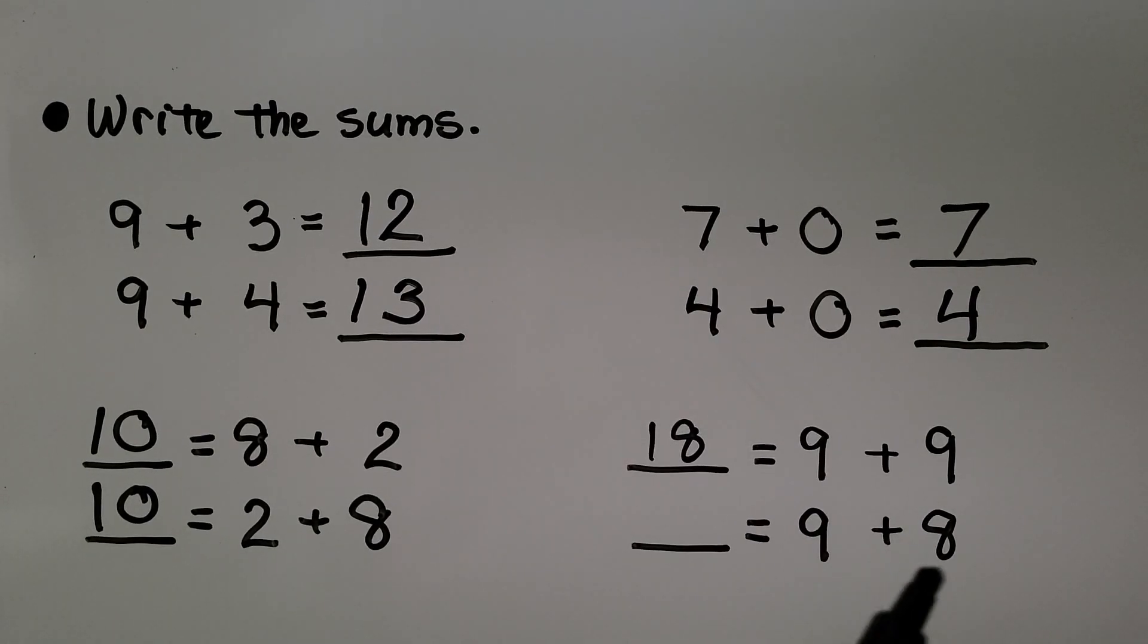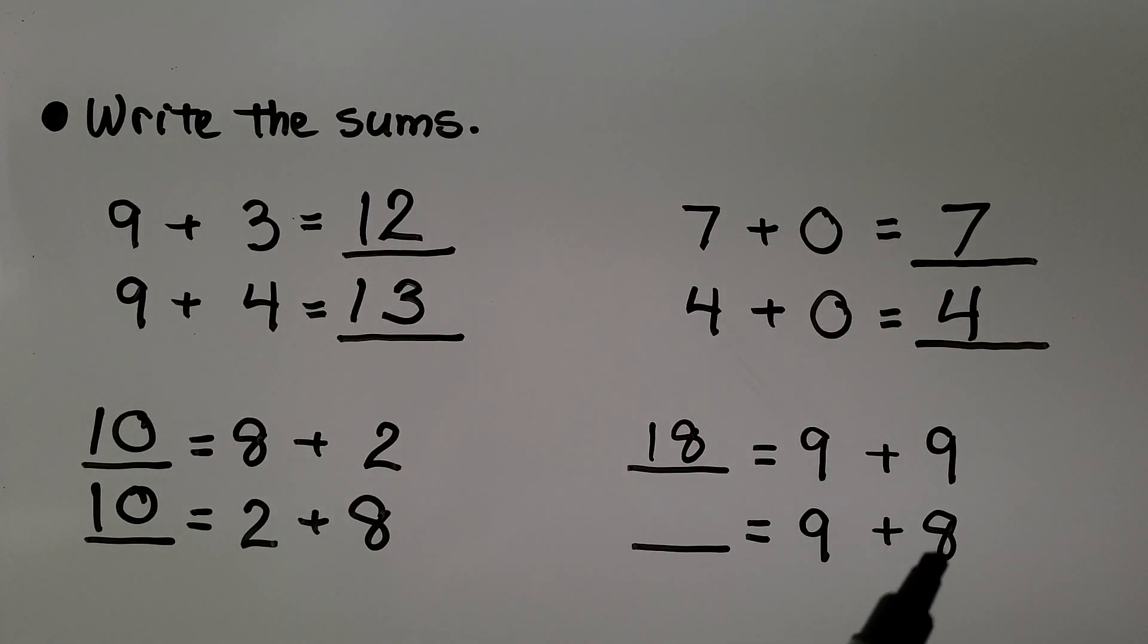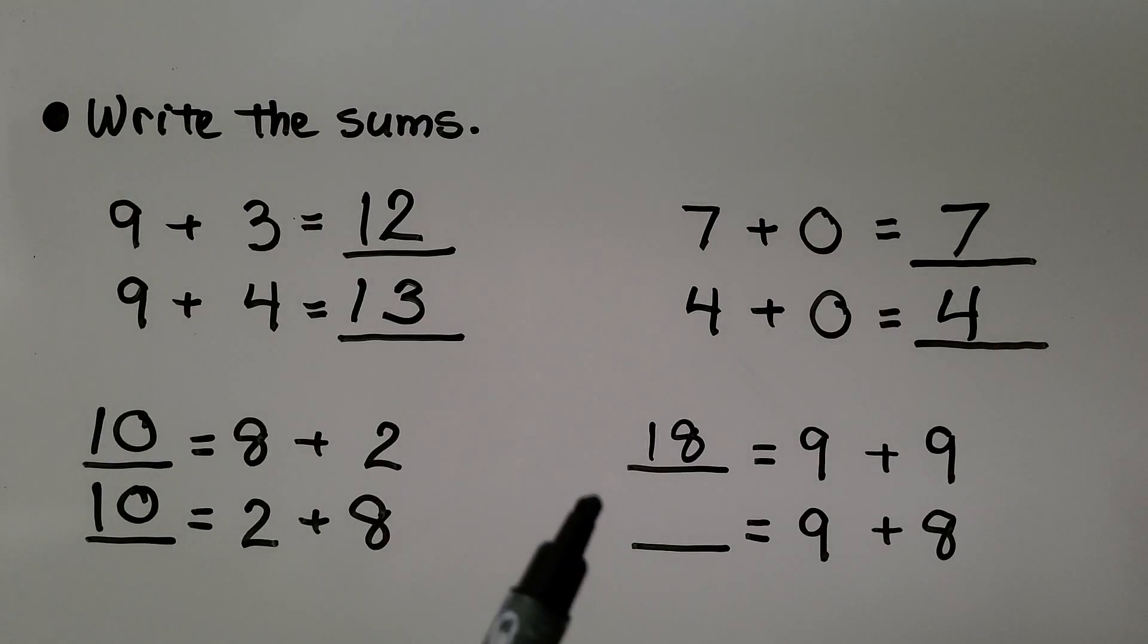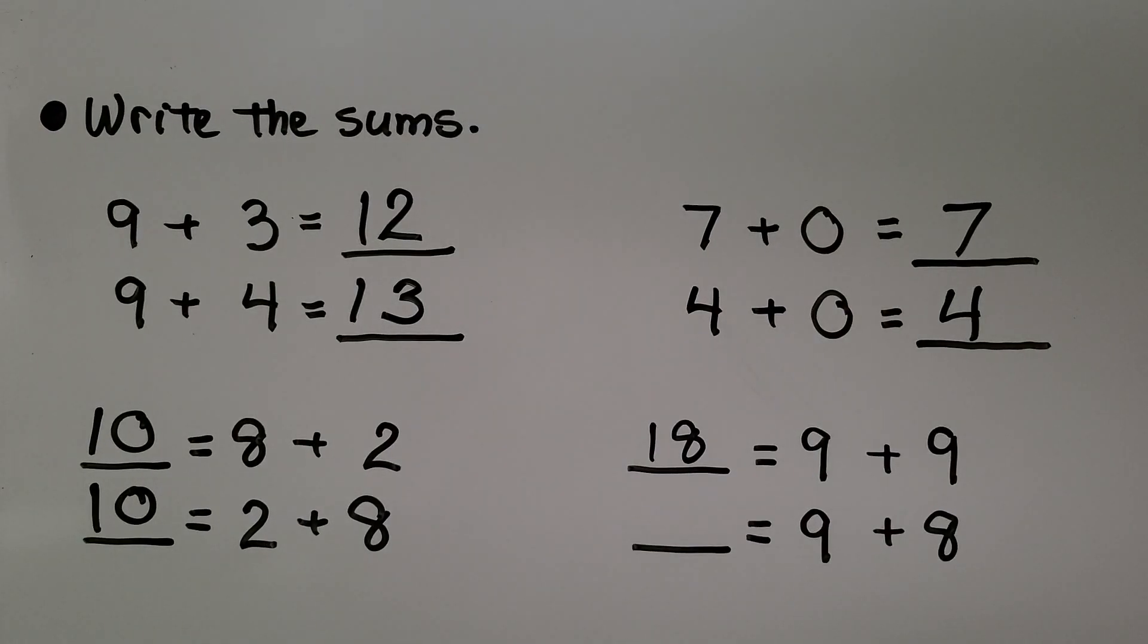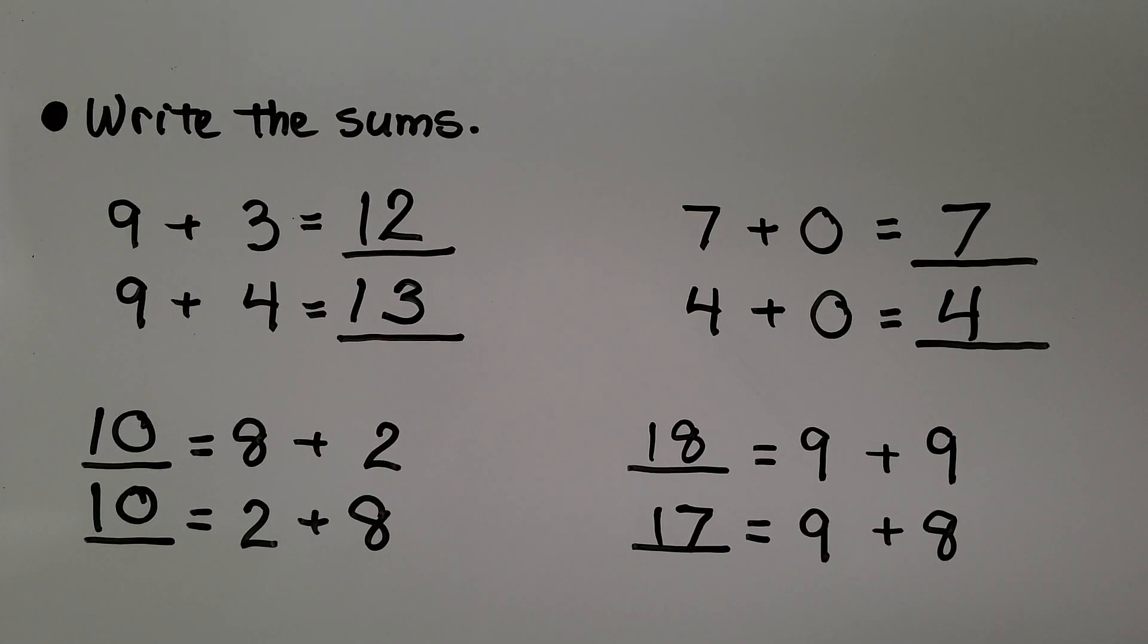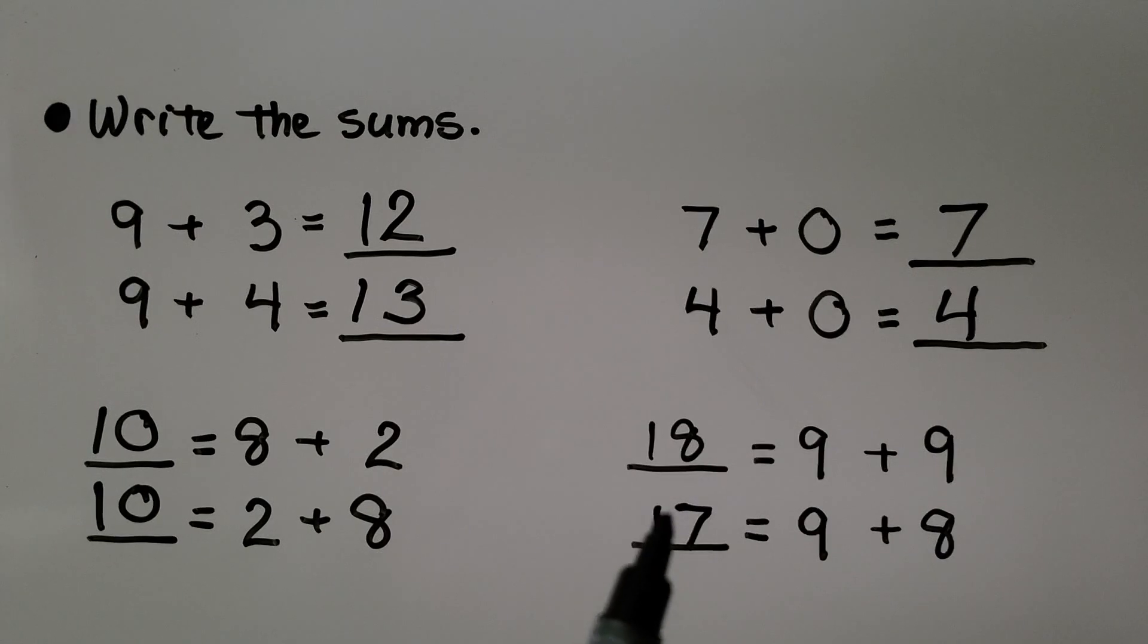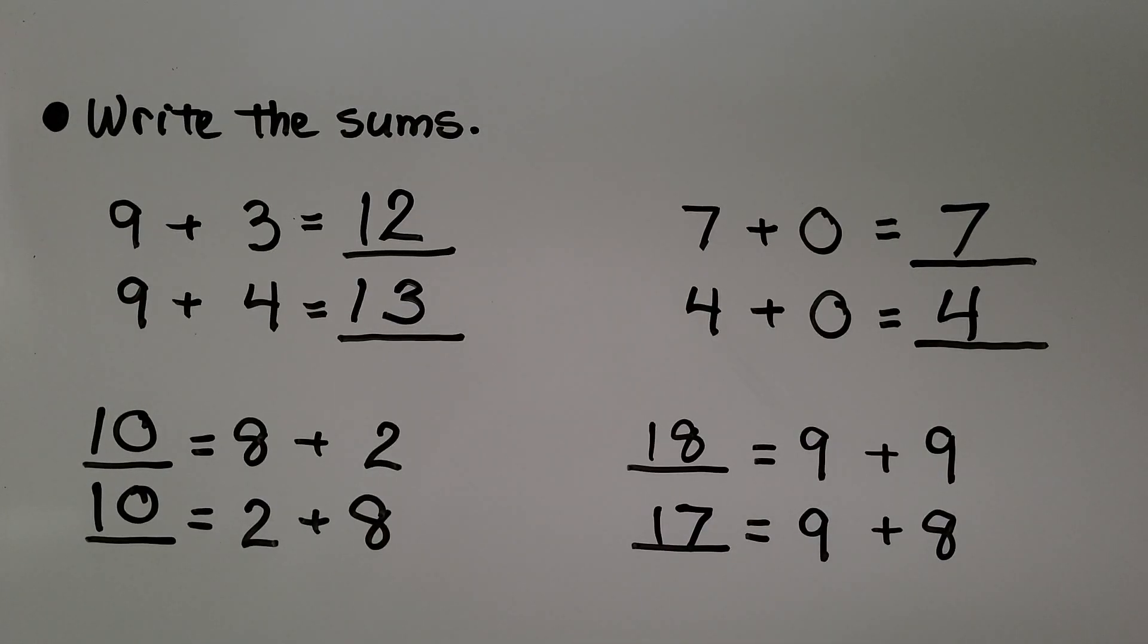So what would be 9 plus 8? These addends are the same. This one is 1 less. We can do 18 and 1 less. That would be 17. 9 plus 9 is equal to 18. So 18 is equal to 9 plus 9. And 17 is equal to 9 plus 8.